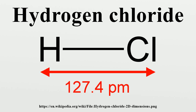The infrared spectrum of gaseous hydrogen chloride consists of a number of sharp absorption lines grouped around 2,886 cm−1. At room temperature, almost all molecules are in the ground vibrational state V=0. To promote a hydrogen chloride molecule to the V=1 state, we would expect to see an infrared absorption about 2,880 cm−1. This absorption, corresponding to the Q branch, is not observed due to it being forbidden by symmetry.